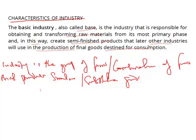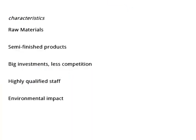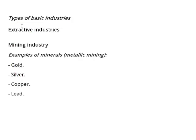On to characteristics of industry: the industry requires raw materials, the industry produces semi-finished goods, it involves big investments, there is less competition, there is highly qualified staff, and we are going to have environmental impact. Now let's look at the basic types of industries.